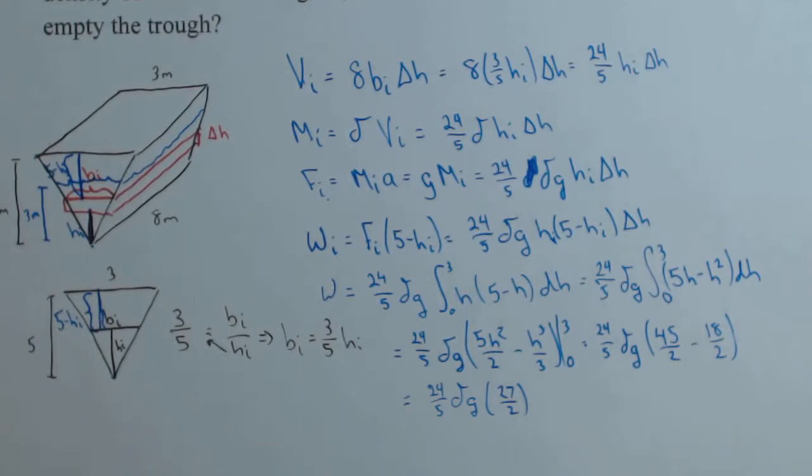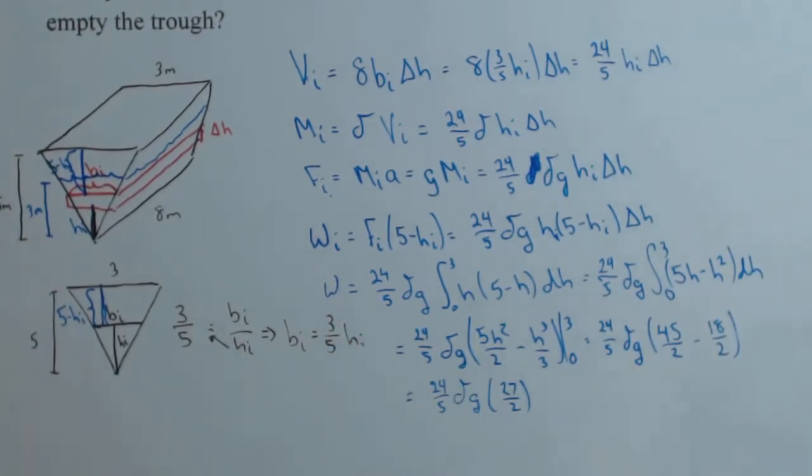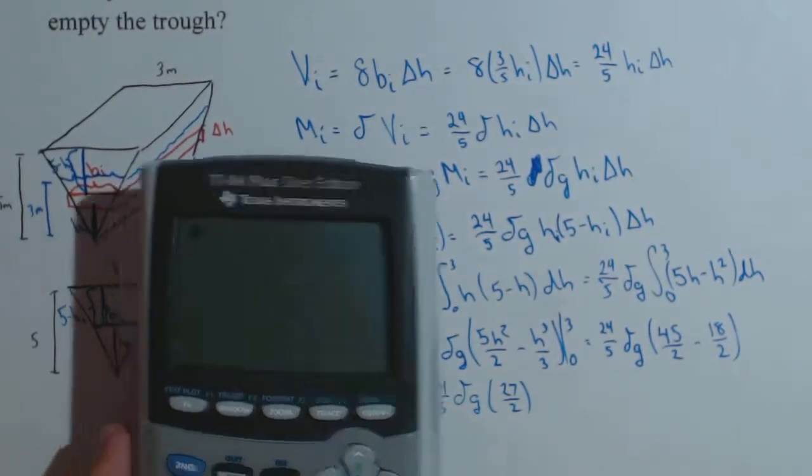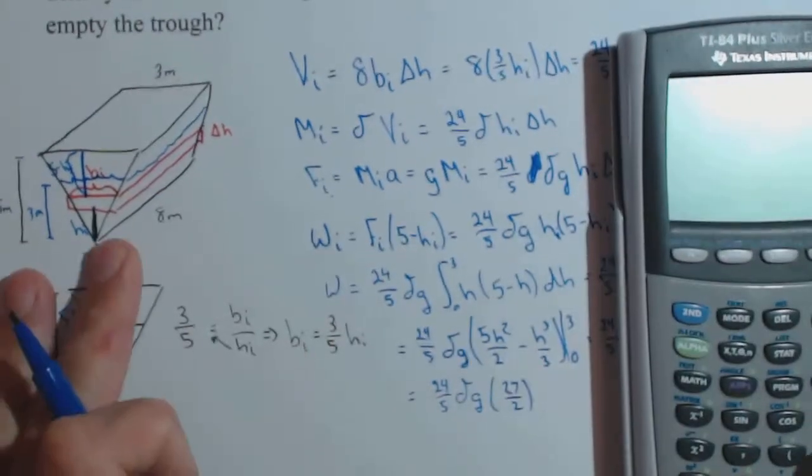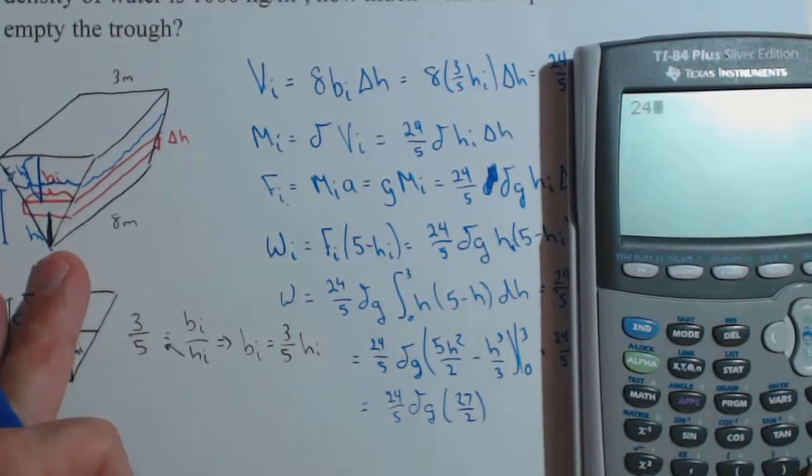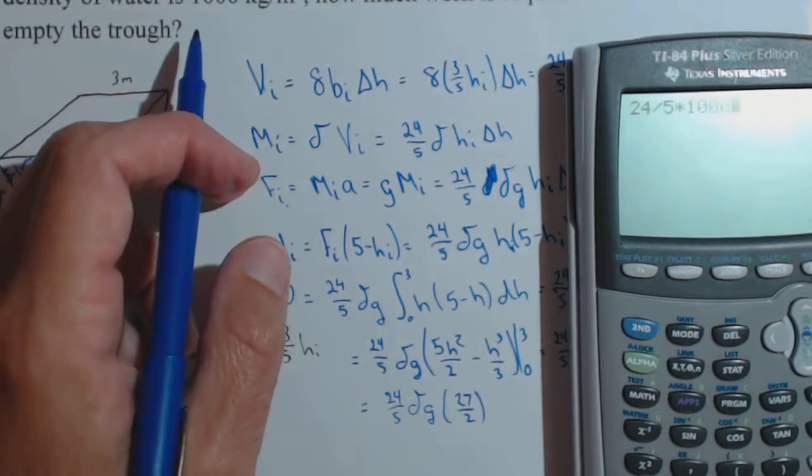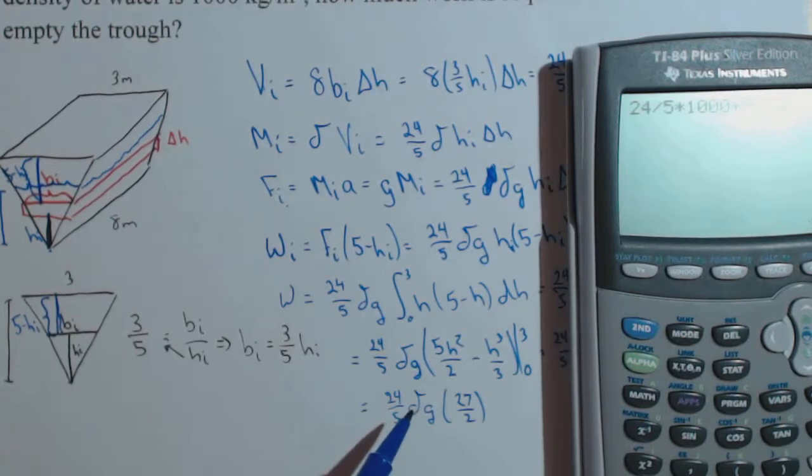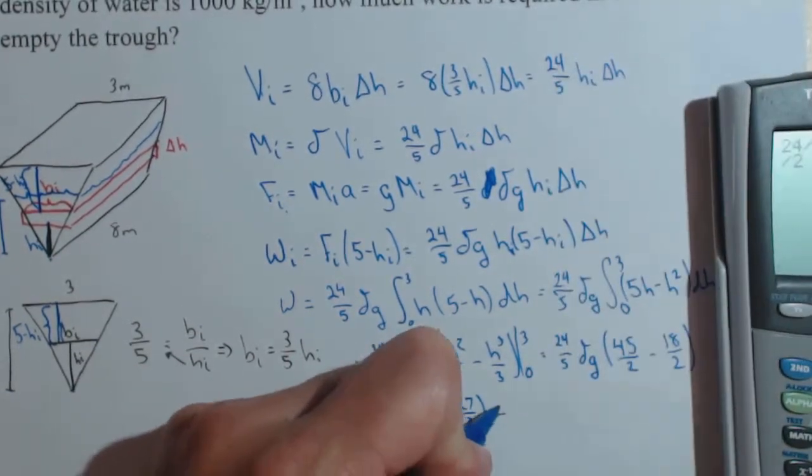Now, this could go ahead and all get multiplied together. So if we were to multiply that together, let's see what our final answer is going to look like. So putting all our numbers in, we have 24 divided by 5 times delta, which was 1000, times g, which is going to be 9.8, times 27 halves. And there's our final answer.